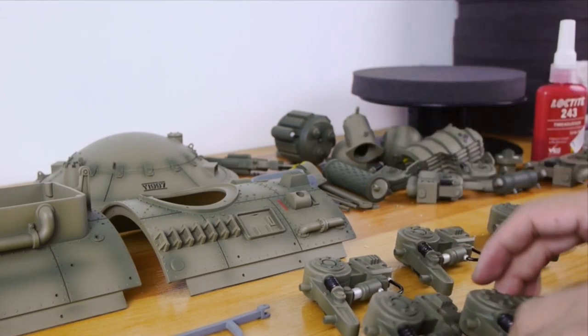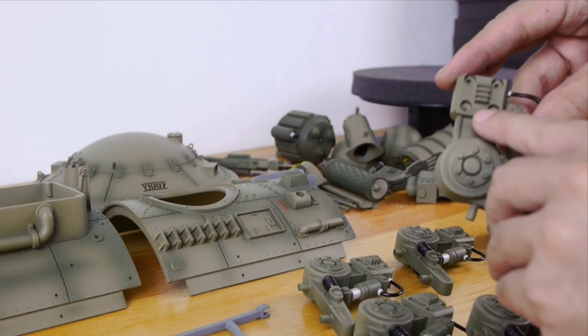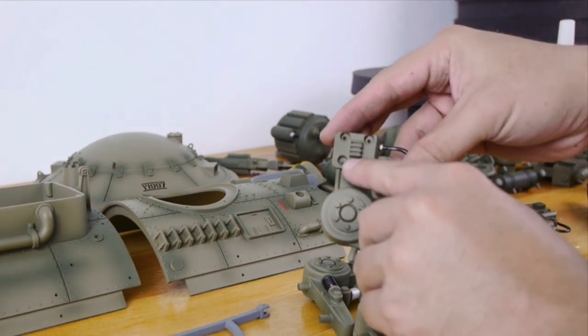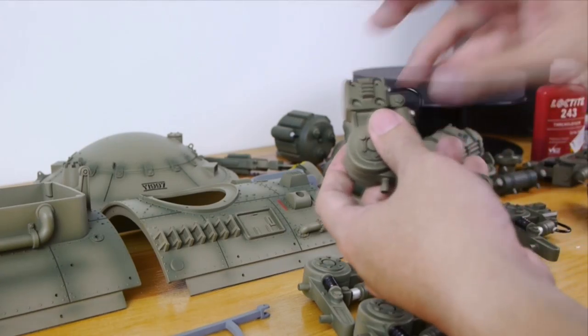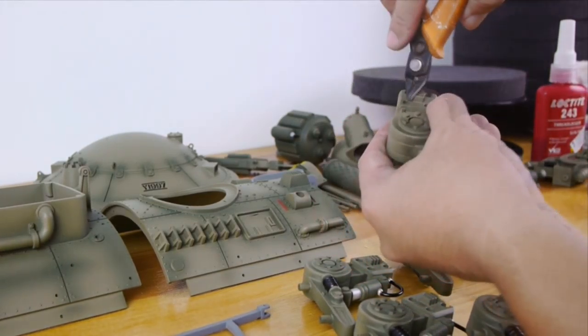The simple thing to do is to get a 1mm, 1.5mm bit, you might have to snip off a little bit of the excess and just drill out the holes.